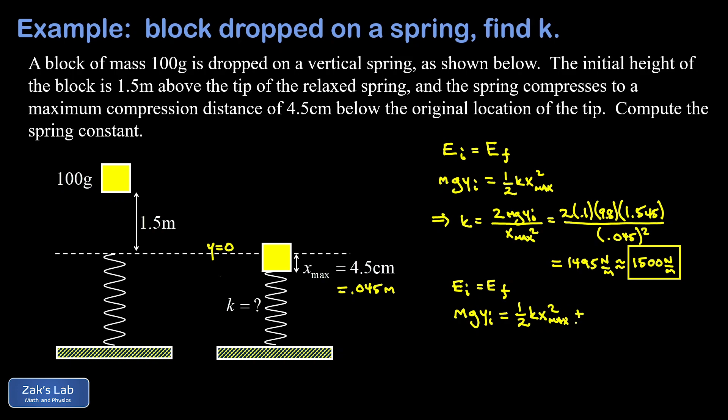but we also have a potential energy term because in our final state, the location of the object is actually a little bit below the origin. So that has to count as negative. I still get to write this down as mg y final, but that y final is a negative four and a half centimeters because it's below the origin.